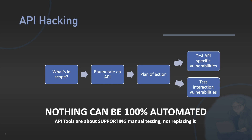One thing to note is that none of these stages can really be 100% automated. These tools are about supporting your manual testing, not replacing it. That's really key, because one of the great things about API hacking is that it is hard to automate. The pros aren't automating API hacking because it's hard to automate and it's better to support manual testing methodologies where we can. So really, the two parts of my API hacking automation are in the enumeration and the testing for specific vulnerabilities.